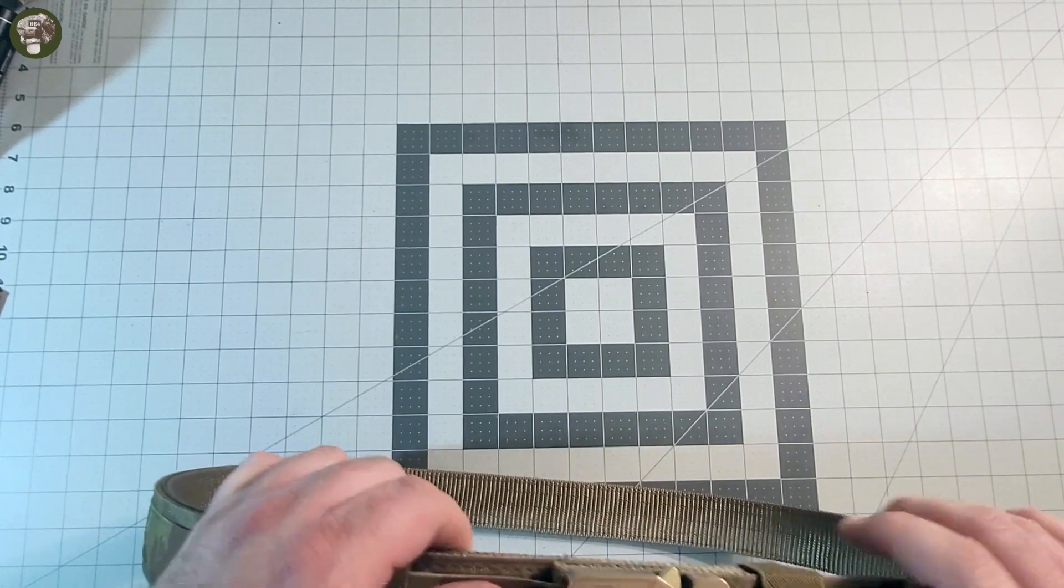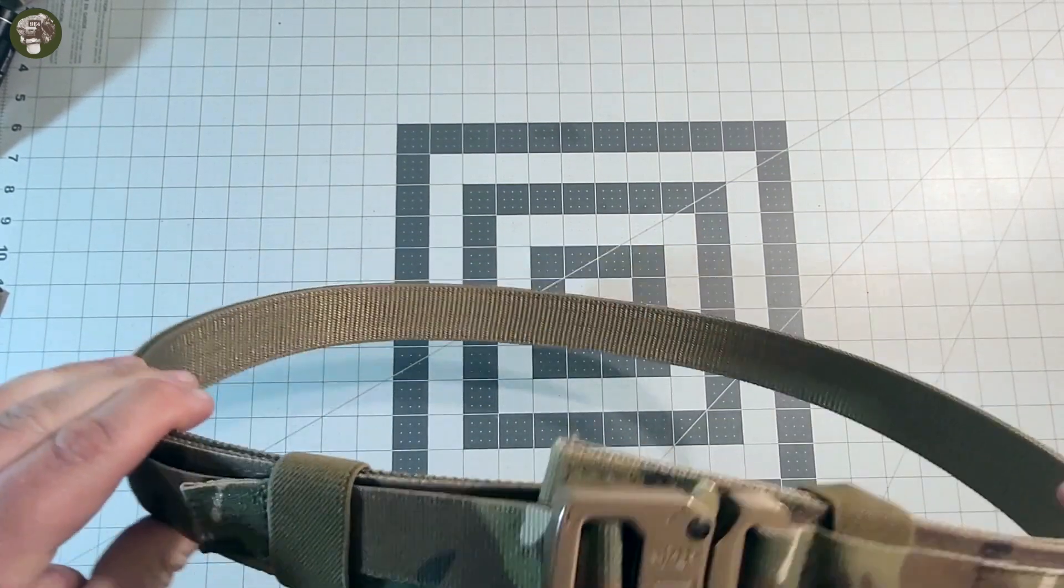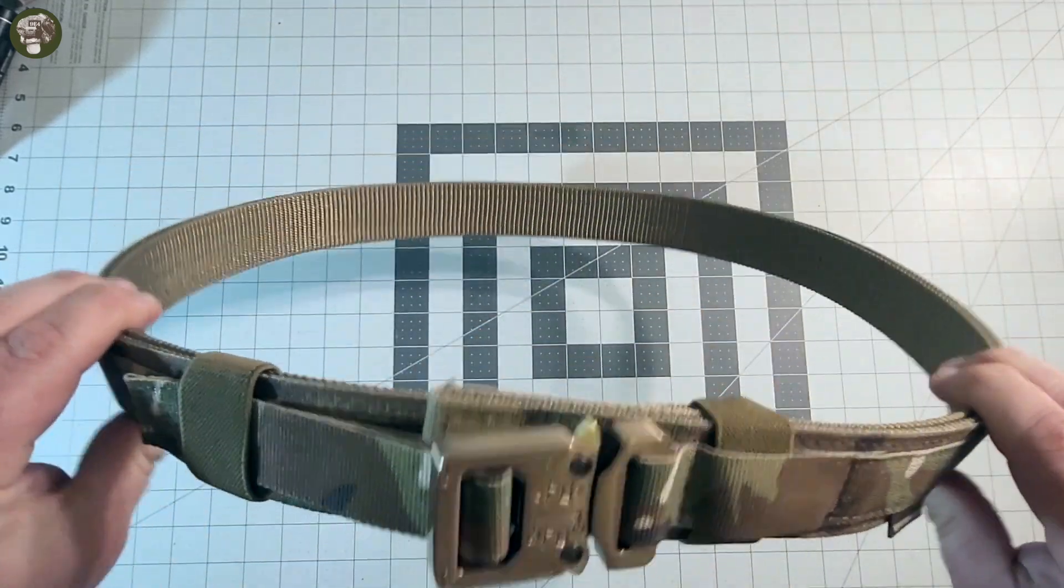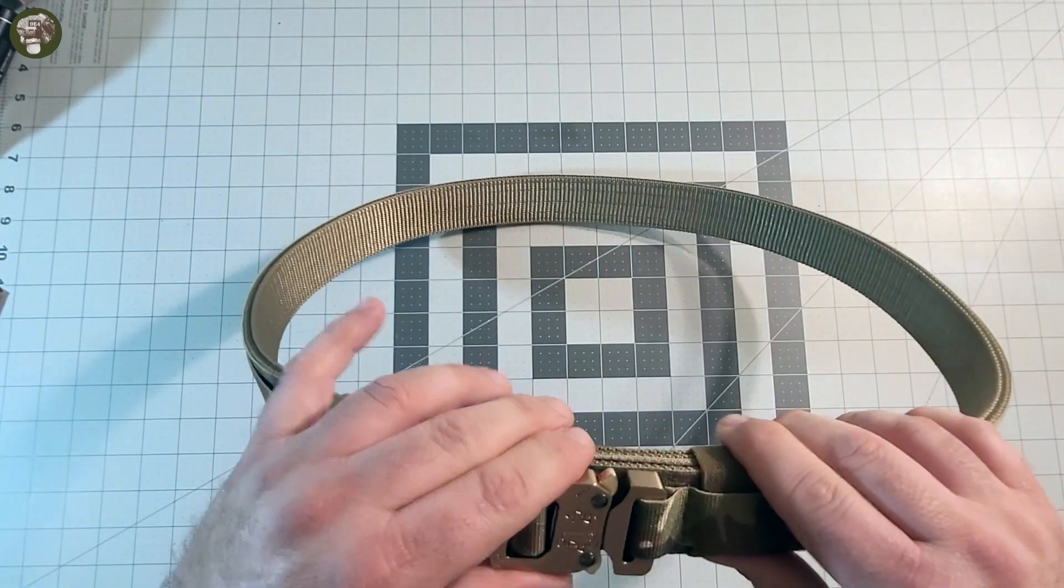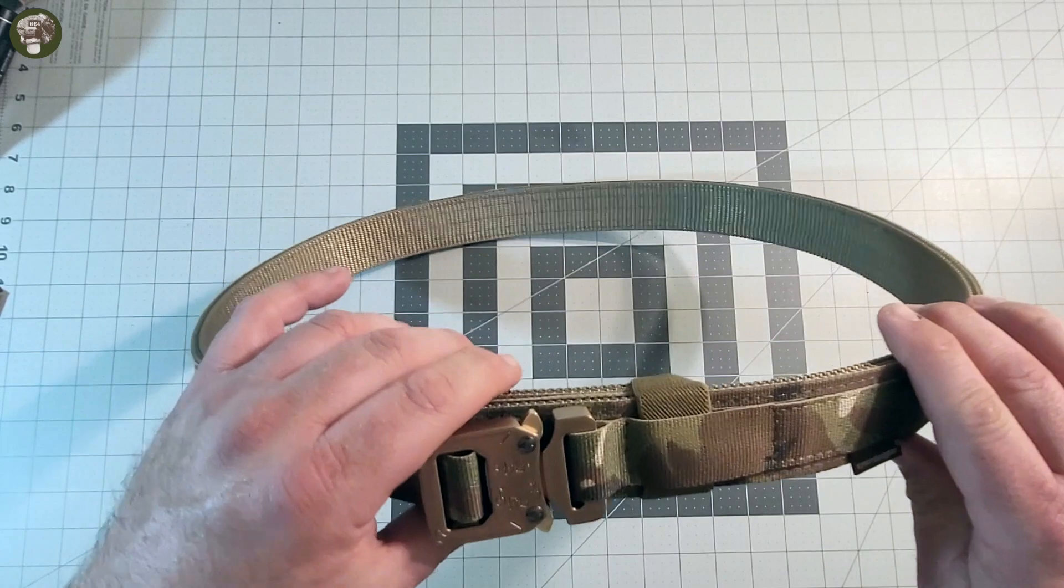So when you get the belt on, it is kind of wonky and weird. It wants to flop around on you. And even when you get it in that elastic, it still kind of has this really weird flex point right in the center, right under that buckle. The buckle's not tight at all, and that is kind of an issue.